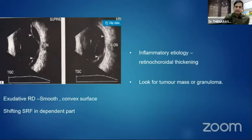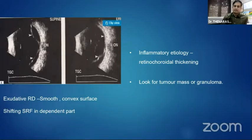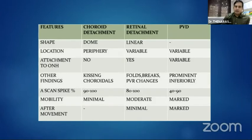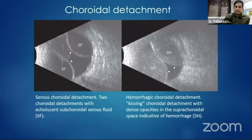In exudative retinal detachment there is classic shifting fluid — the first picture is taken in the lying-down position and the second in the sitting position, showing an increase in convexity and fluid. We should also look for choroidal thickness and any underlying masses due to inflammatory conditions or mass lesions causing exudative RD. Choroidal detachment is differentiated from retinal detachment: it is restricted to the periphery, dome-shaped, with very minimal mobility, and may be serous or hemorrhagic variety.